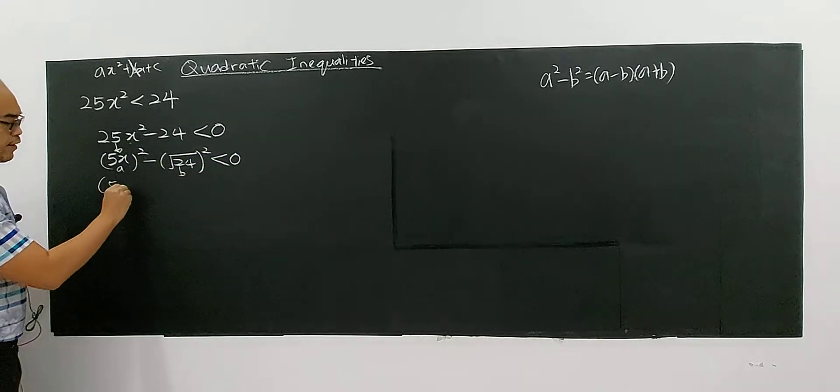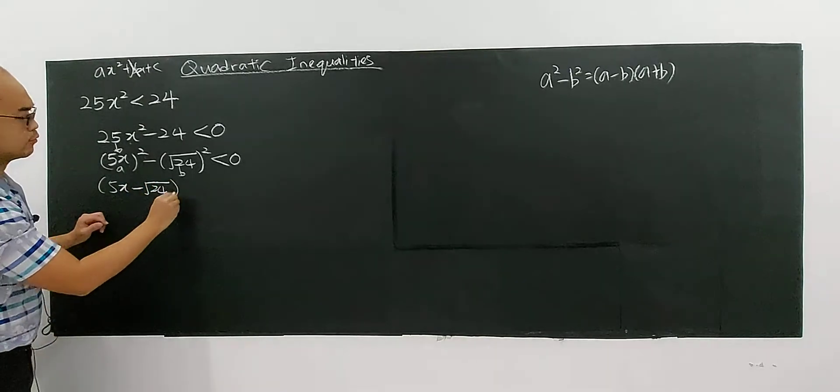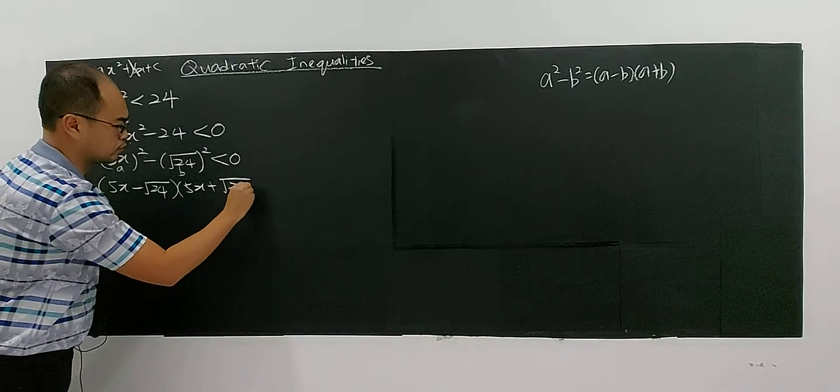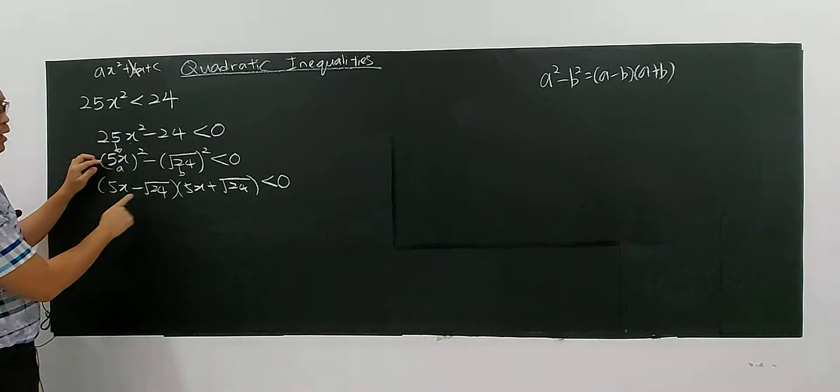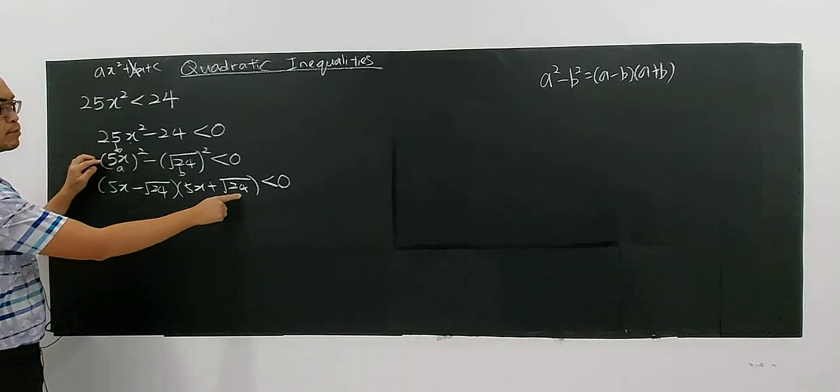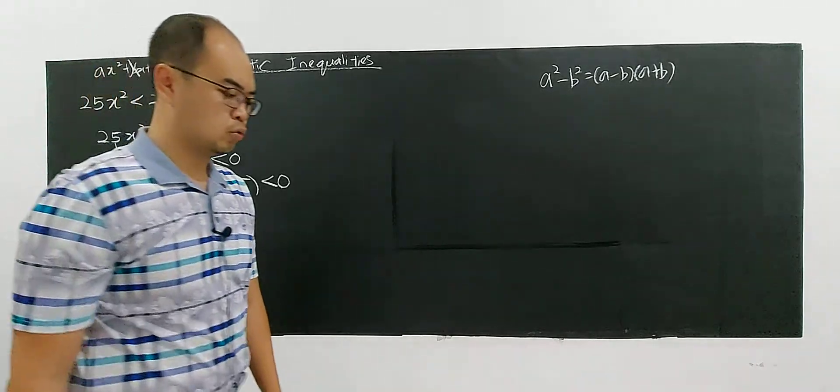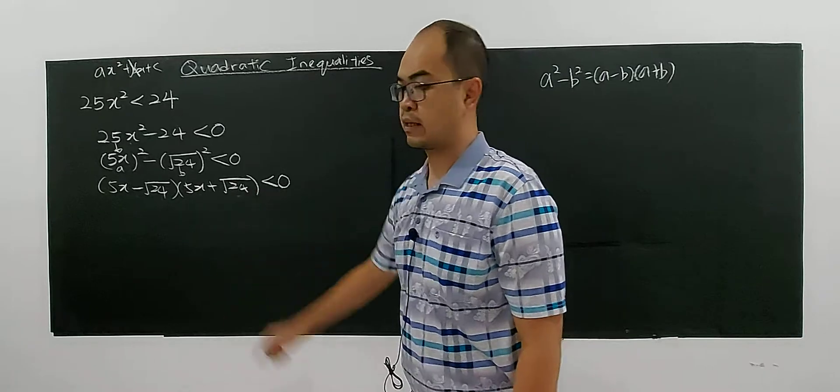You will have 5x minus square root of 24, and the other one will be 5x plus square root of 24. A minus b, a plus b. Then, come up with these two factors here. Two linear factors there.